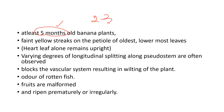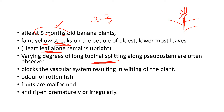You will first see faint yellow streaks on the petioles of the lowest leaves. It is an ascending infection spreading from the soil through the stem upward into the plant. All the lateral leaves get infected, leaving only the heart leaf remaining upright. Varying degrees of longitudinal splitting are often observed on the stems, resulting from the blocking of the vascular system.